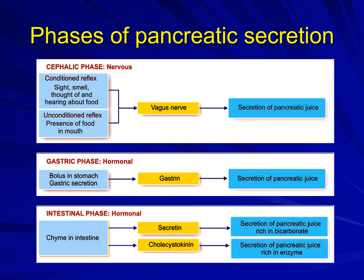The third phase is the intestinal phase, occurring when food has entered the intestine. As discussed, the presence of food in the intestine leads to release of two dominant hormones: secretin and cholecystokinin (CCK). These two hormones act on the exocrine pancreas to release pancreatic juice rich in both enzymes and bicarbonate — the aqueous component.